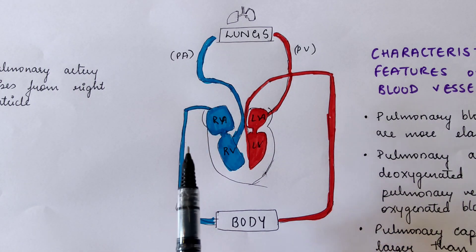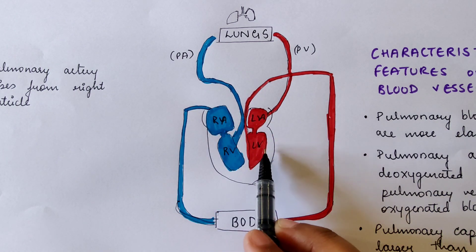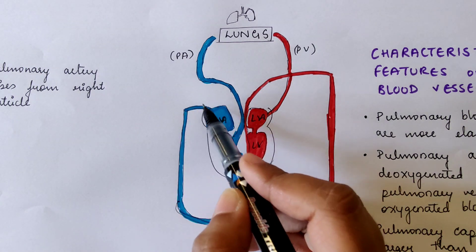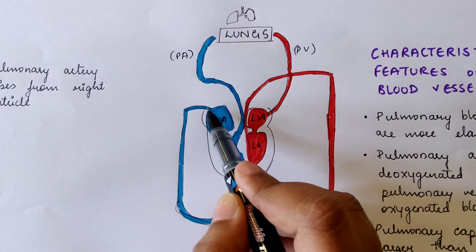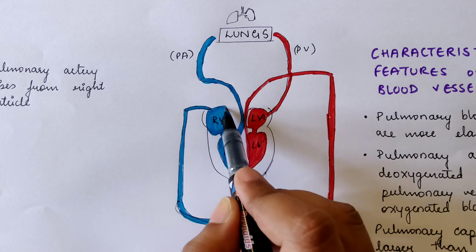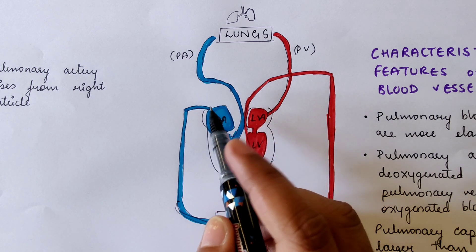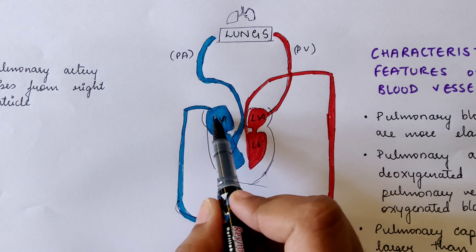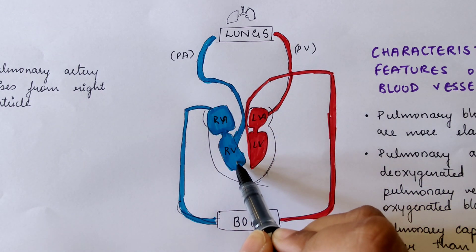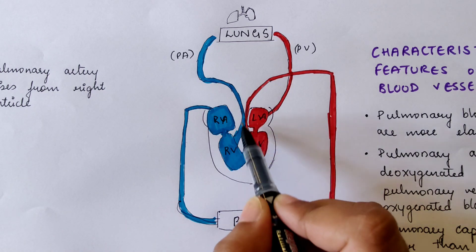Now we know that the heart has four chambers: the right atrium, the left atrium, the right ventricle, and the left ventricle. The veins in our body end up in the big superior and inferior vena cava and come into the right atrium. All the deoxygenated blood that needs to be oxygenated comes into the right atrium, then into the right ventricle where it is pumped to the lungs.